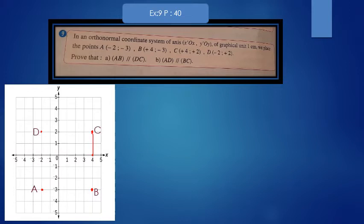D(-2,+2). We start with the abscissa and then go up two steps to reach plus 2. This is point D. I have to prove that AB is parallel to DC.